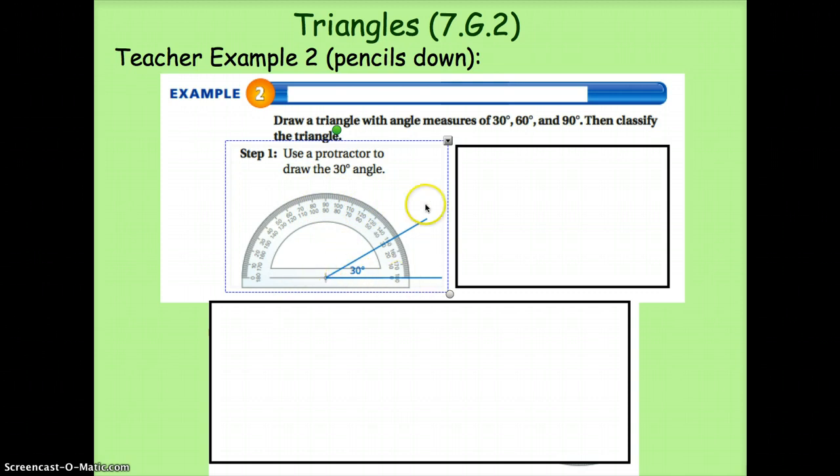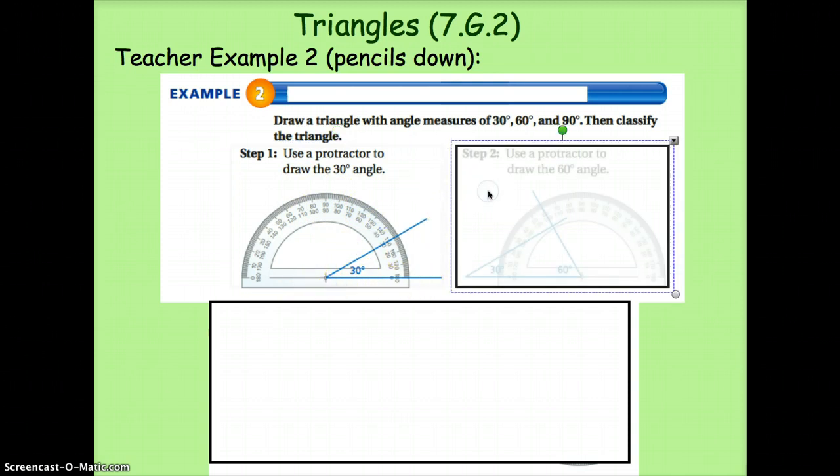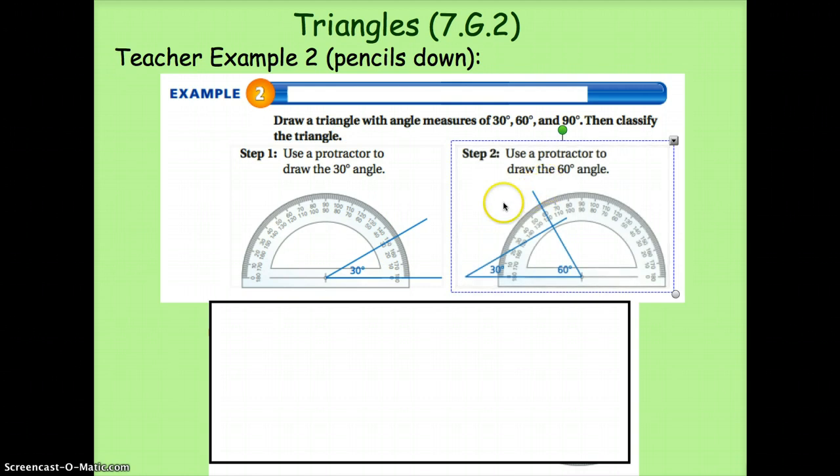Step two, we need to use a protractor to draw a 60 degree angle. And notice we can put this 60 degree angle on either end and we just extend the lines up. Wherever they happen to cross is going to be our third angle.